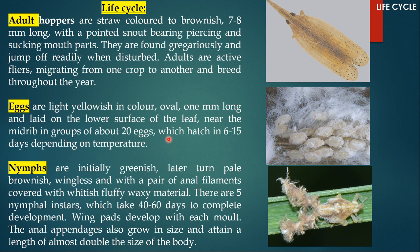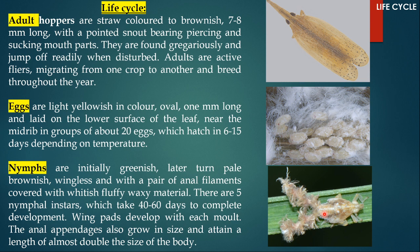When the eggs hatch, the nymphs come out. The nymphs are initially greenish and they later turn pale brownish. Nymphs are always wingless because they have wing buds which develop into full-grown wings in the adult stage. The nymphal stage will not have wings or reproductive organs — the adults will have both, which differentiates nymphs from adults. Pyrilla purpusilla nymphs have something very special: two anal filaments covered with whitish fluffy waxy material. Because of these long anal filaments, they look like a trident. These nymphs take about 40 to 60 days to complete development, and the wing pads develop with each molt until the wings are fully grown in the adult.